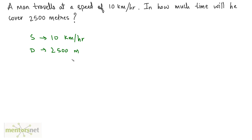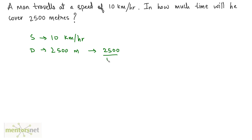Whenever solving problems related to speed, time, and distance, you should pay close attention to the units. Here the speed is given in kilometers per hour and the distance is in meters. So either convert the speed to meters per hour, or convert the distance to kilometers. Let us convert the distance: 2500 meters equals 2500 divided by 1000 kilometers.